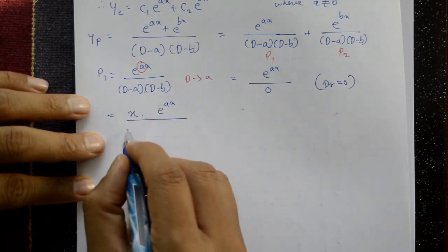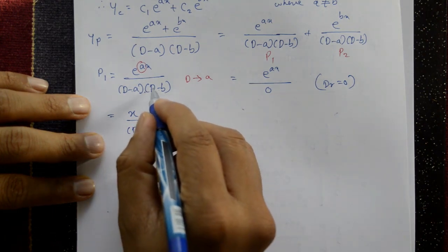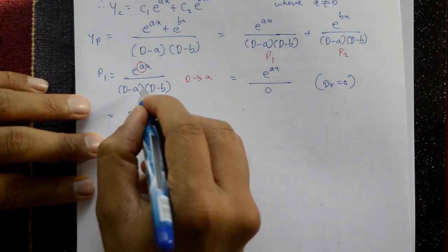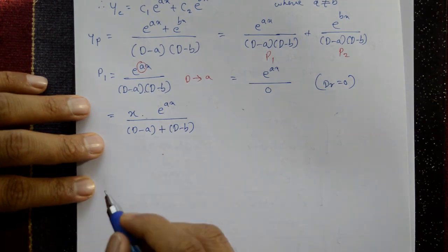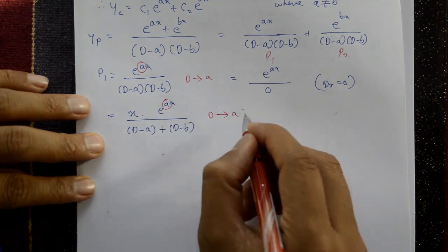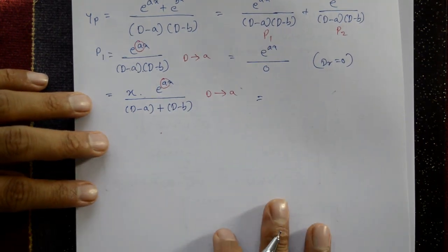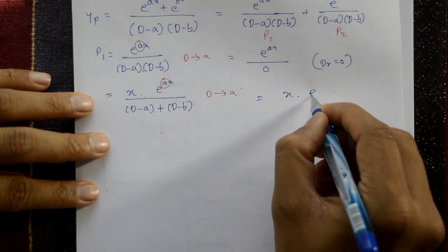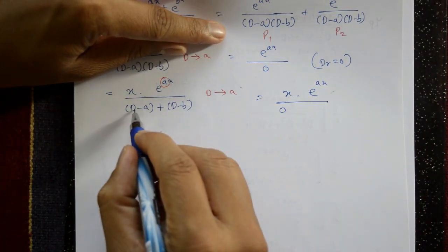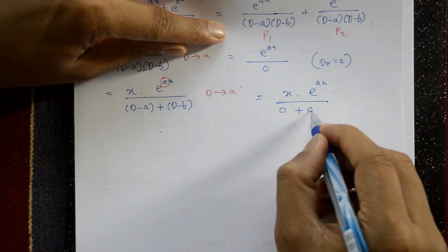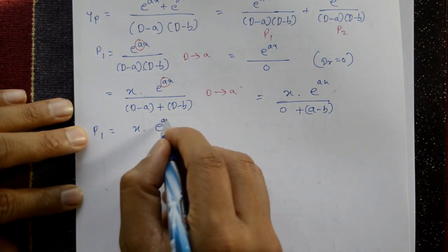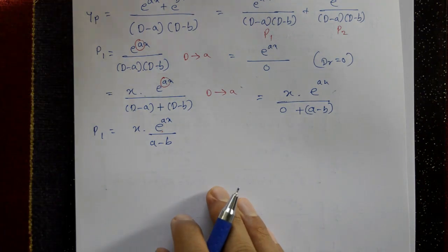Differentiating using the product rule: f'(D) = (D-a)·1 + (D-b)·1. Putting D = a: f'(a) = (a-a) + (a-b) = 0 + (a-b) = (a-b). So P₁ = x·e^(ax) / (a-b).